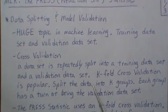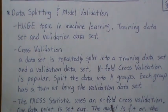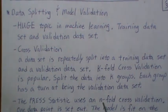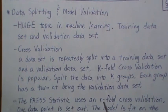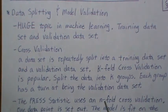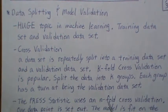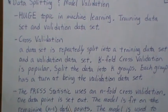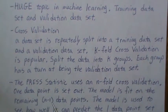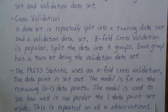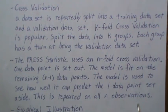The PRESS statistic is a type of cross-validation that uses n-fold cross-validation — also called leave-one-out cross-validation. You set one data point aside, fit the model on the other n minus one data points, then use that model to see how well it predicts the one data point set aside. This is repeated for all n observations, so there are n fits to the data.